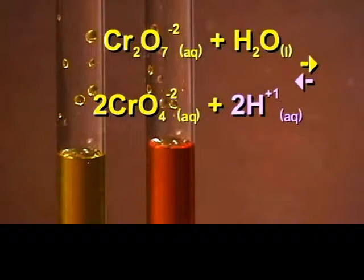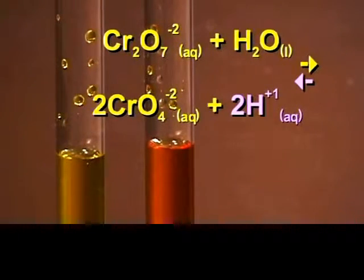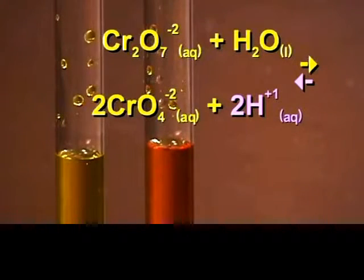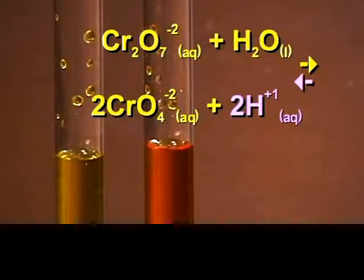The nitric acid provides a source of hydrogen ion. The reaction shifts in the reverse direction to try and use up the hydrogen ions that have been added.